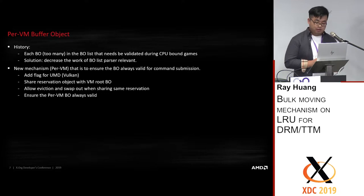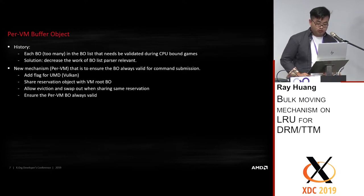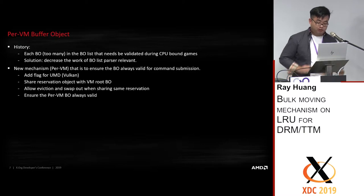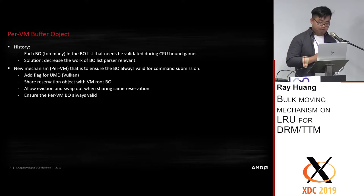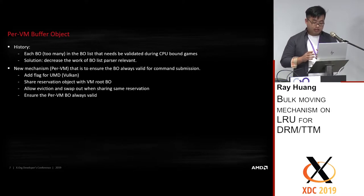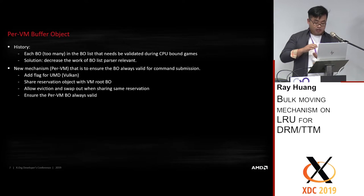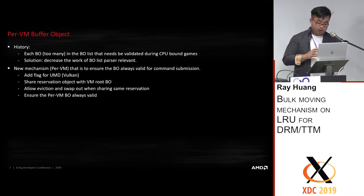Let's move to the prevailing buffer object. This definition was proposed to address another performance bottleneck — it cost too much during buffer validation in the BO list for some CPU-bound games. We co-worked with the Vulkan driver to organize BO types and divide them into prevailing BOs and sharing BOs. A prevailing BO is owned by one thread and one VM, so we don't need to validate it on the kernel side because it shares reservations with the VM. Only sharing BOs are added to the BO list, which decreases the validation workload.